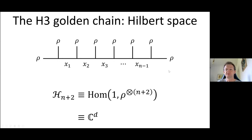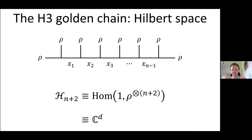This Hom space is a finite-dimensional Hilbert space, isomorphic to C^d for some d that scales very fast with n. That's the kinematics of our system. There's one parameter at the moment: n, the number of anyons we fuse together. So we have not just one kinematical Hilbert space, but a sequence indexed by n — just pick n and you get a bigger one.